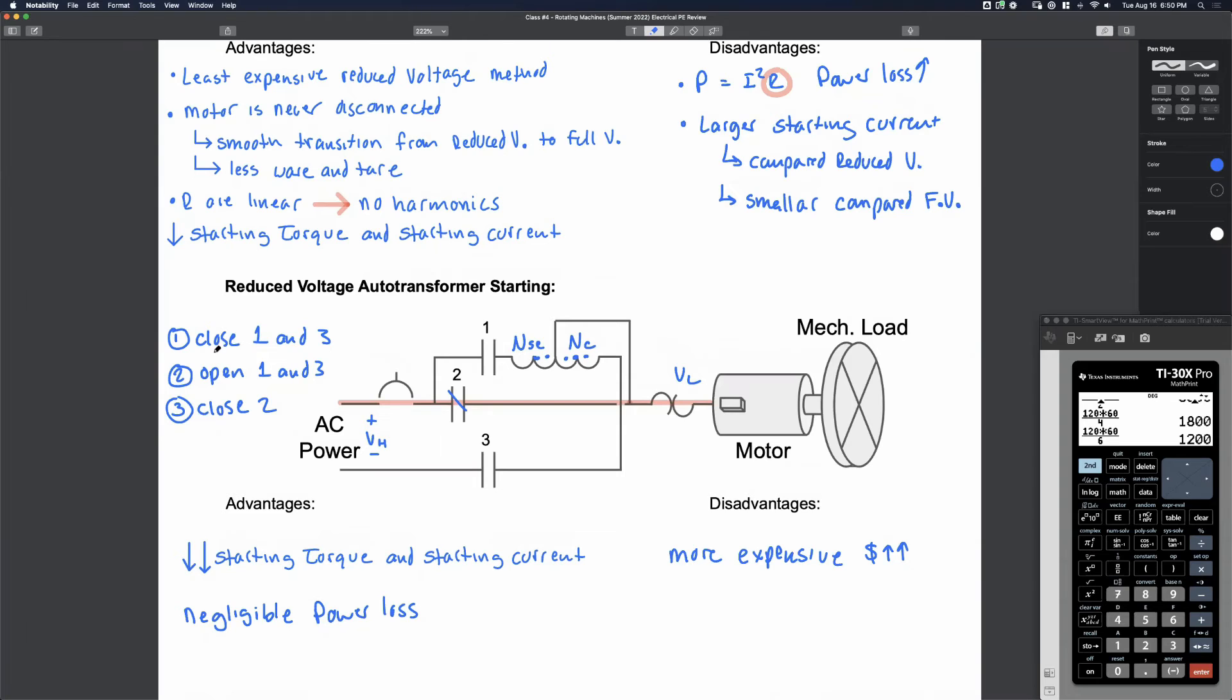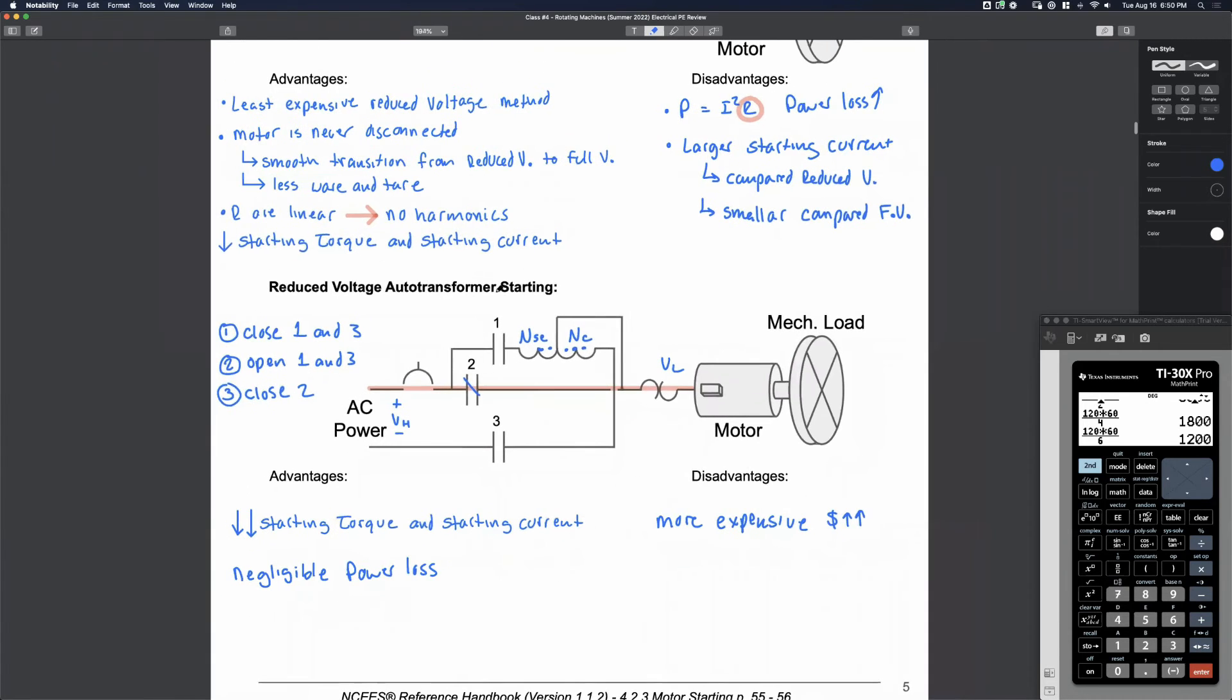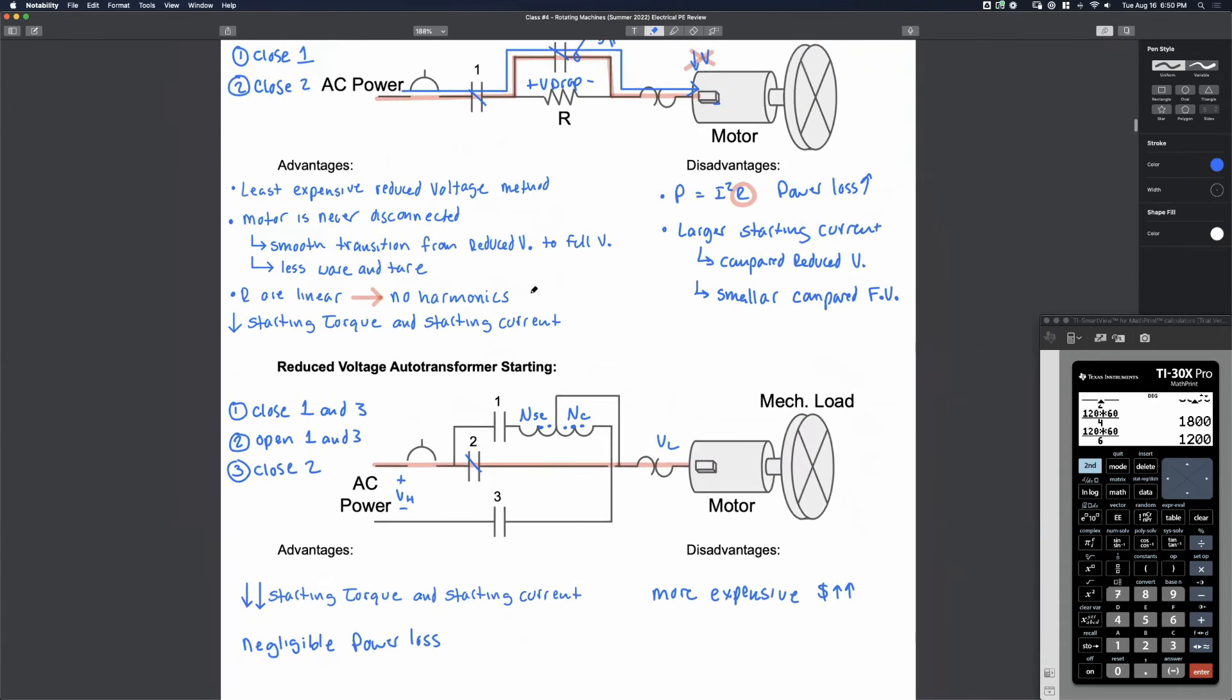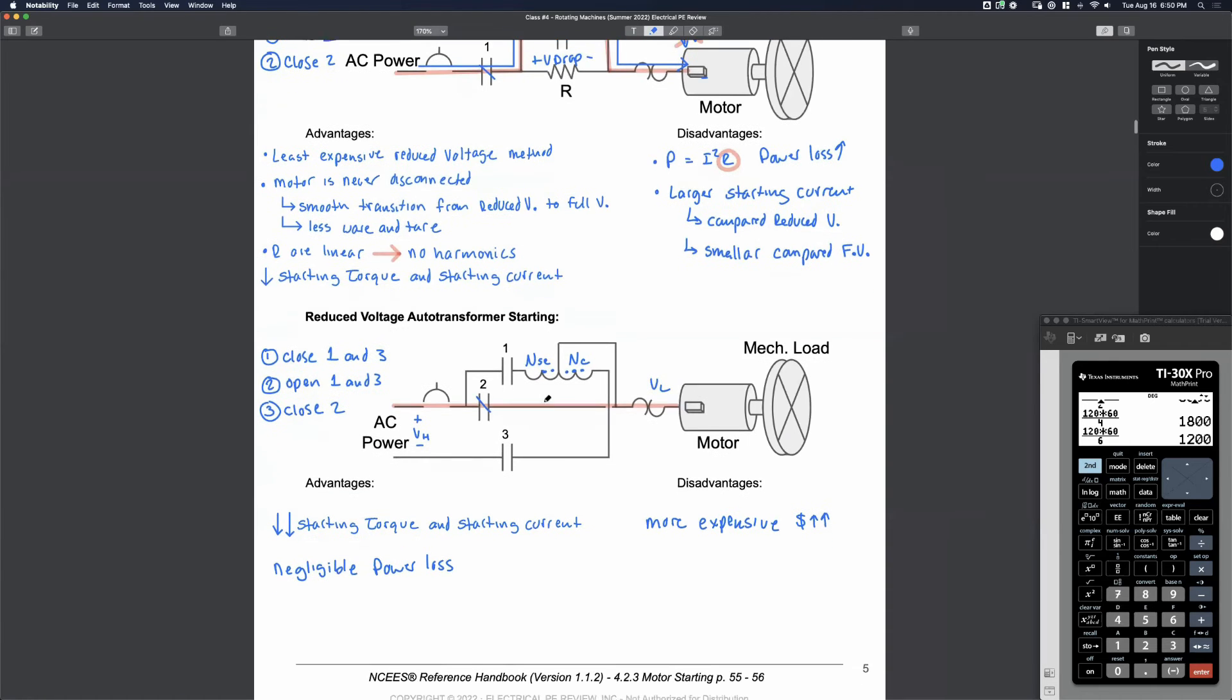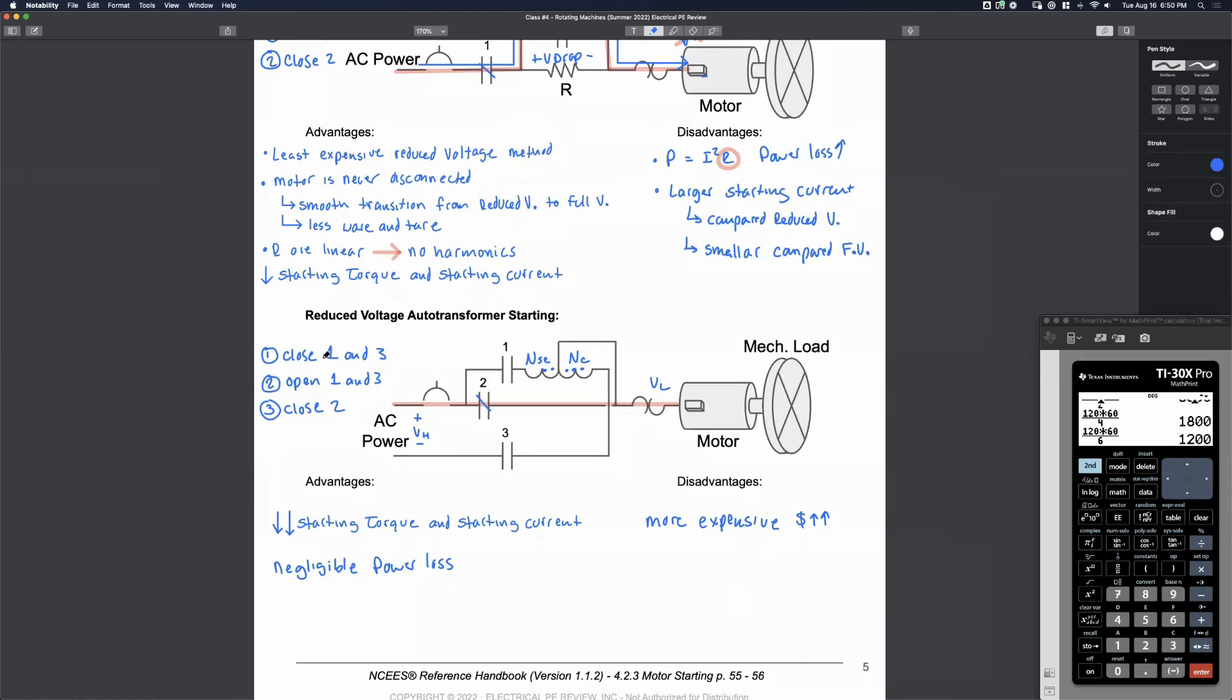And what else? What do you guys notice about the start sequence compared to the start sequence of the reduced voltage resistor starting? Longer, more complex. Disconnected, said Kevin. Yeah. That motor was disconnected temporarily. We open one and three, apply reduced voltage. I'm sorry. We rather we close one and three, apply reduced voltage. Then we open one and three. There's no power until we close number two. So since the motor is temporarily disconnected, there's going to be more wear and tear. So now the motor is temporarily disconnected. We'll say the motor is temporarily disconnected or maybe momentarily disconnected.